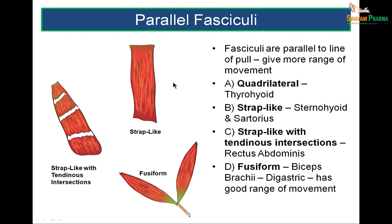Parallel fasciculi are further divided by shape into: quadrilateral (like the thyrohyoid), strap-like (like the sternohyoid and sartorius), strap-like with intersections (like the rectus abdominis), or fusiform (like the heads of the biceps or the digastric muscle).